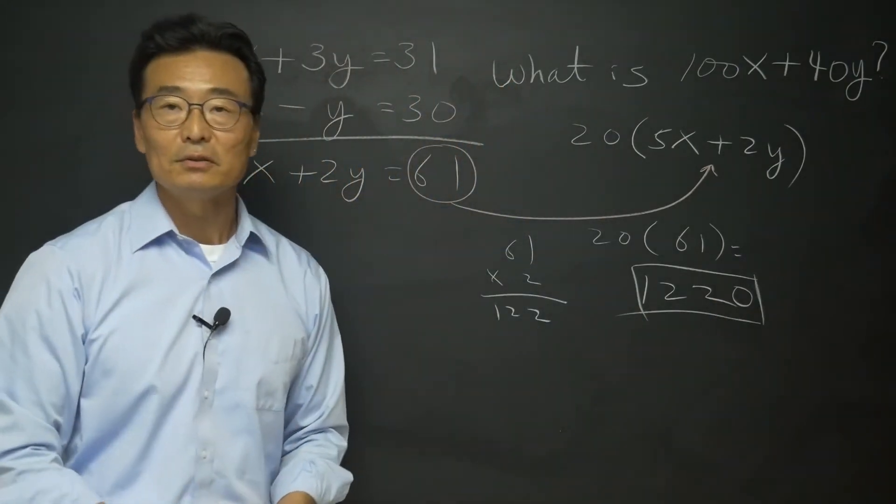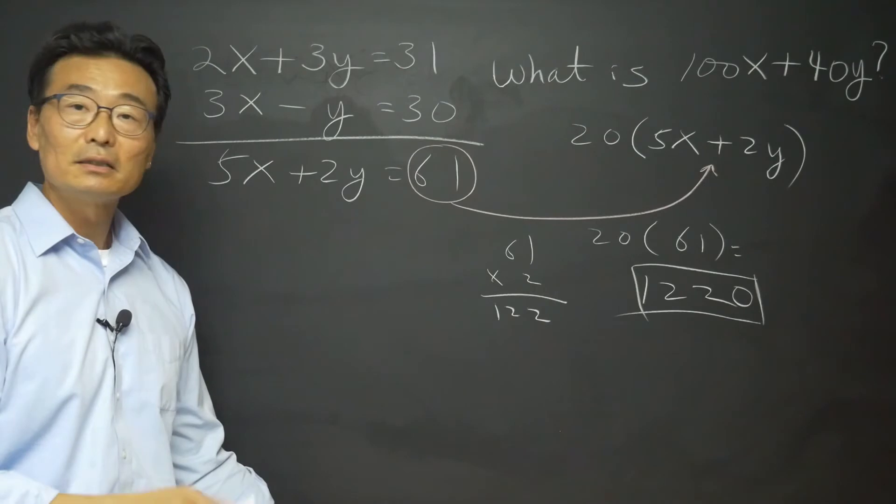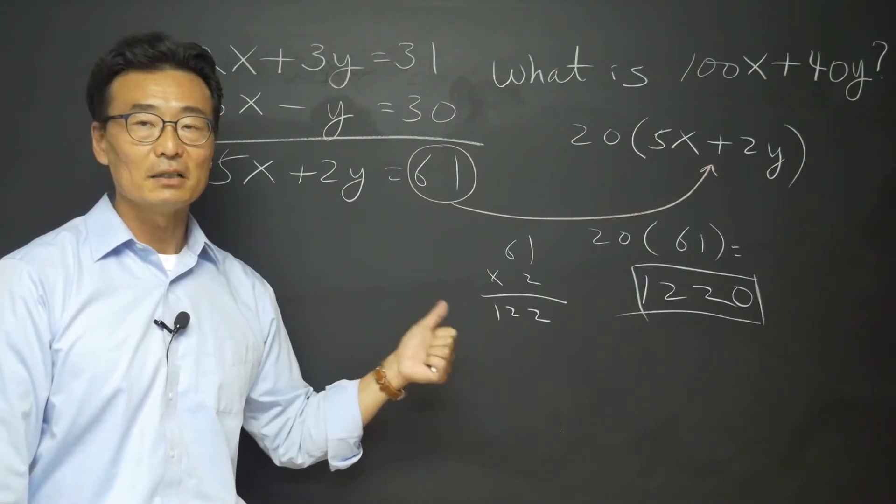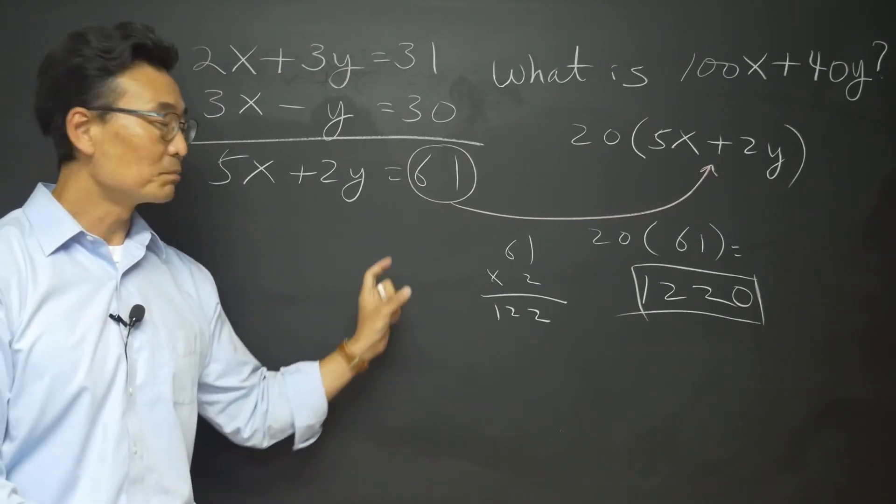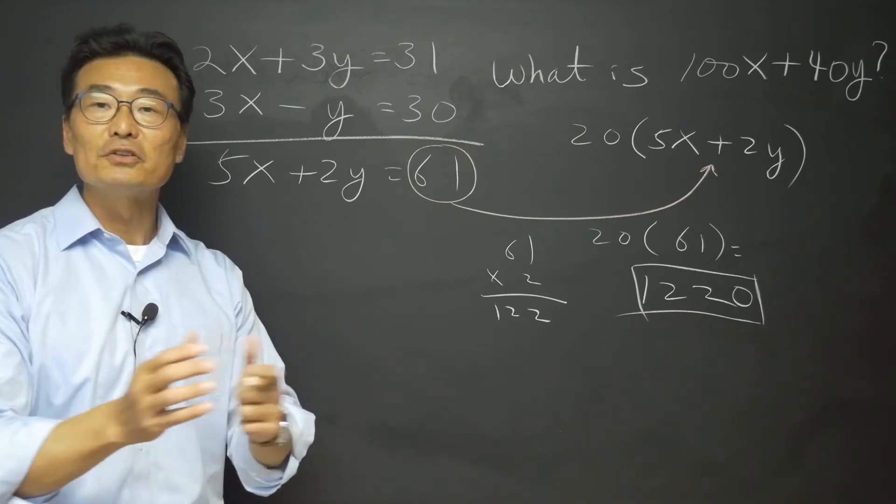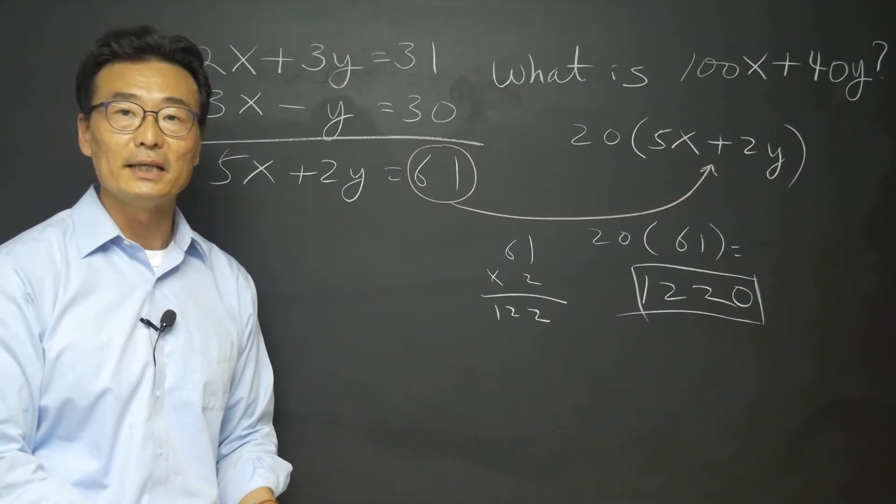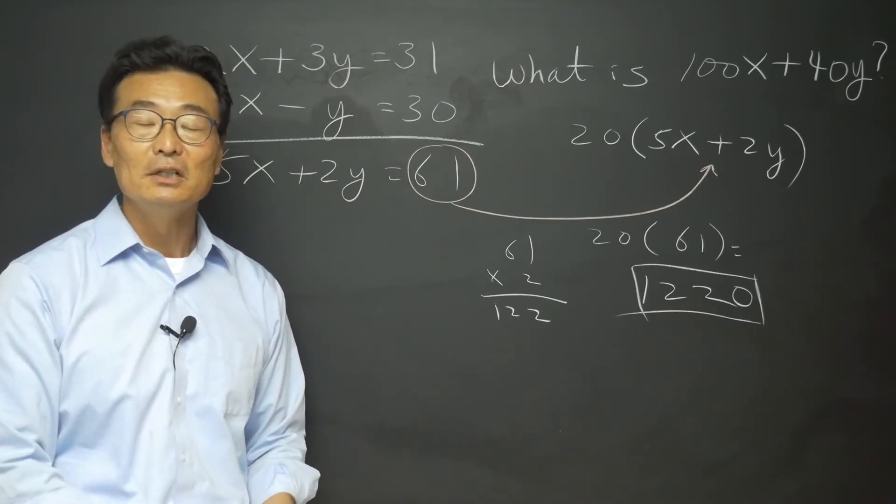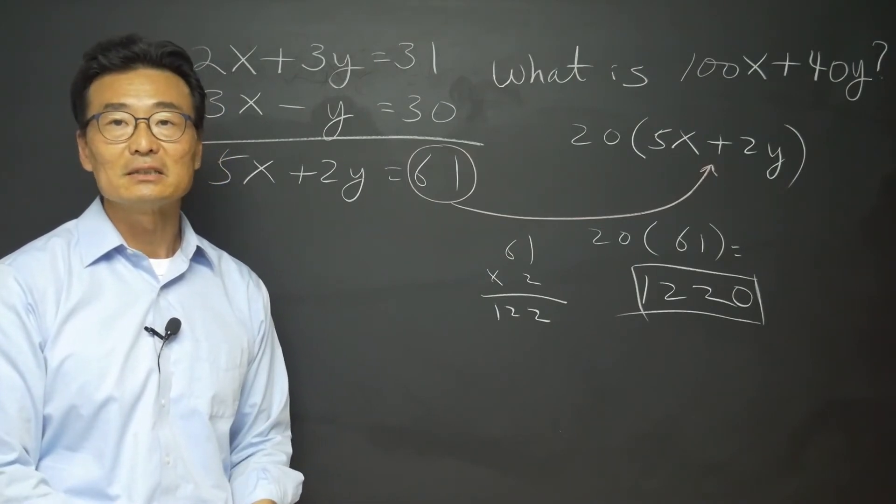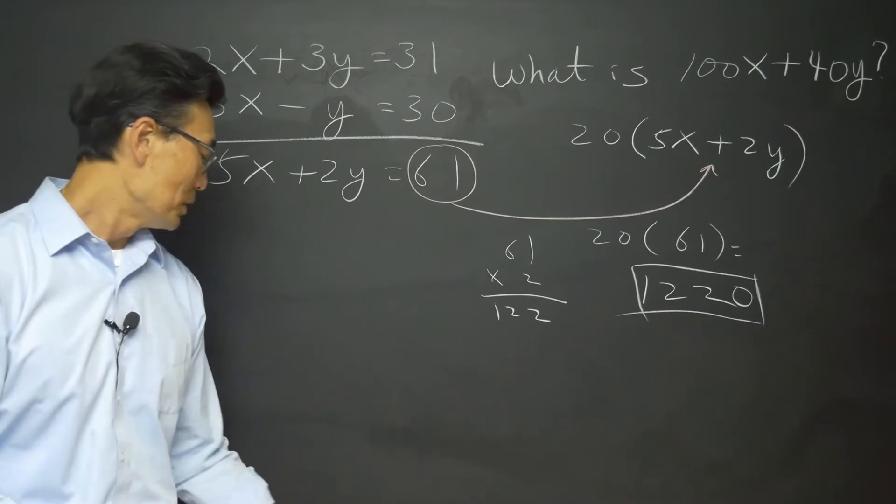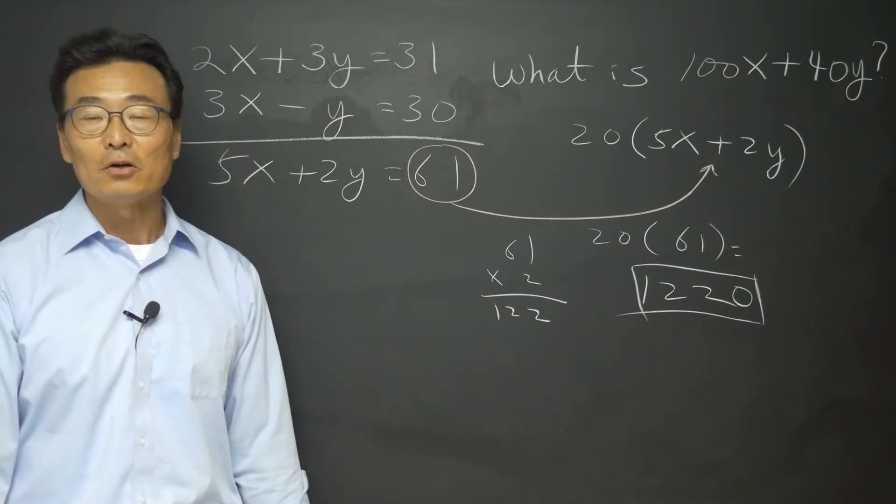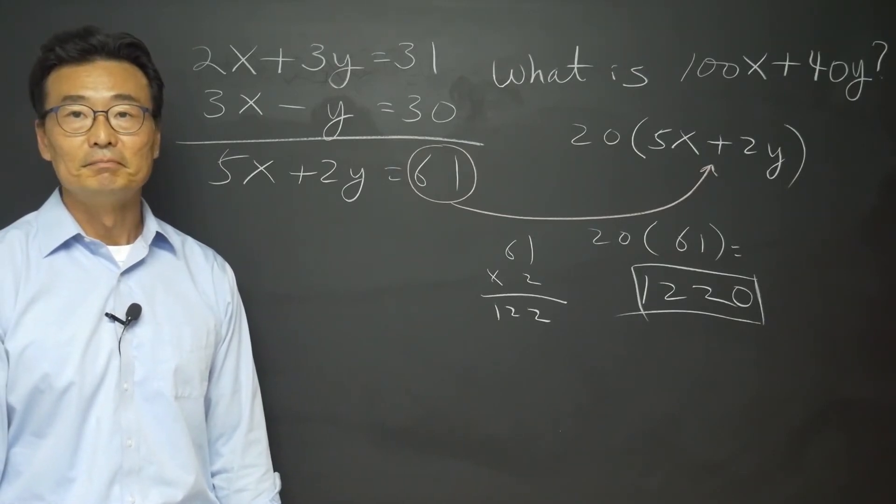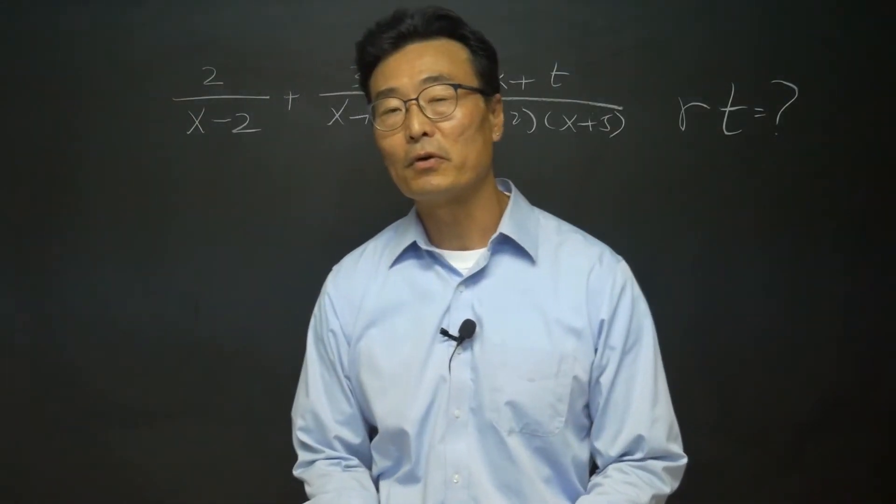So there you have it folks, final answer 1220, just like same as the first method. Only difference is that it took a lot less steps, a lot less time. Meaning if you could save some time here, you could use this time onto another question that's even more difficult or more complicated. And instead of you running out of time, if you're able to do one extra question, that's another 10 points or 20 points on the SAT math. Okay, so I hope you learn the SAT method. Always, whenever it's possible, look for that, because it's there.